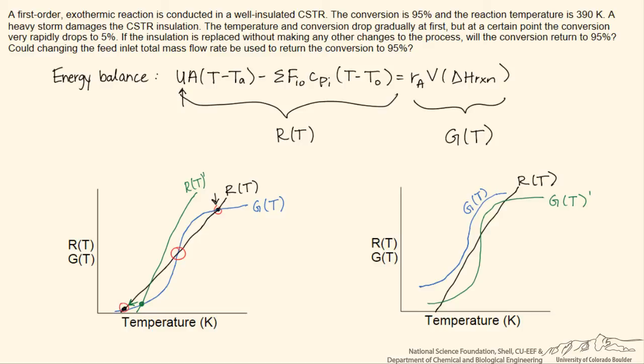So the question is can we change the feed inlet total mass flow rate to return to 95% conversion? One thing that we can potentially do is decrease the inlet mass flow rate, and what that will do is increase the space time in our reactor. And so since we have more time for the reaction to occur, the reaction will really begin to take off at lower temperature, so the overall conversion in the reactor will be higher at any given temperature because the reactants can spend longer in the reactor.